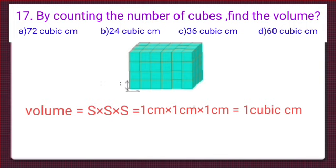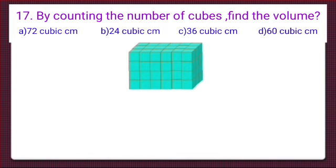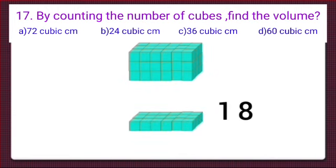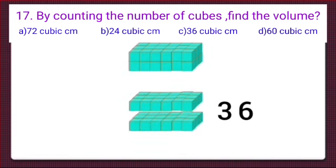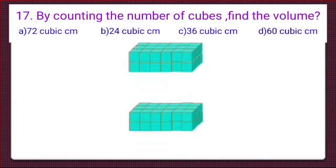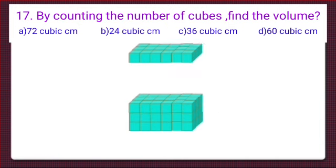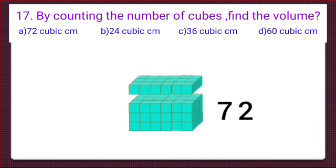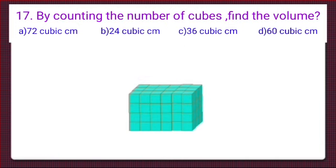The volume of the cuboid is equal to the number of cubes in it. Now we will count the number of cubes: 18, 36, 54, and 72. So the total number of cubes is 72, and the volume of the cuboid is equal to 72 cubic centimetres.